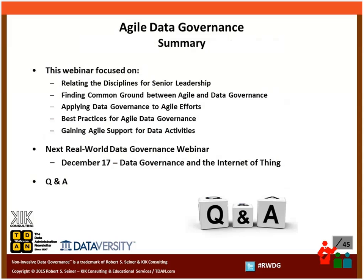I know I spoke a lot quickly and there were a lot of slides, but these are the five main things we focused on: relating the disciplines for senior leadership and getting them to understand these things need to cooperate and work together; finding common ground between agile and data governance; applying data governance to different principles associated with agile efforts; and best practices in gaining agile support for data activities. With that, I'd like to turn it back over to Shannon to see if we have any questions.